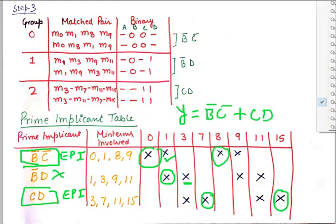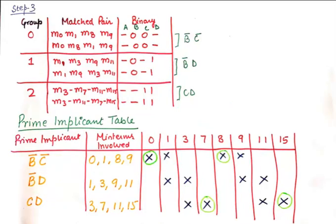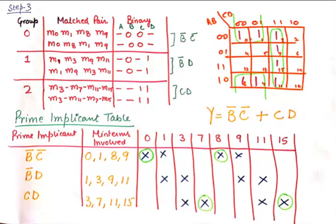To verify, draw the K-map and fill in minterms 0, 1, 3, 7, 15, 11, 9, and 8. The first grouping of four 1s gives CD, and the next grouping of four 1s gives B̄C̄. This confirms the result using both methods. So this is what the tabular method, or the Quine-McCluskey method, is. You can extend this method to five- and six-variable problems as well. I hope you liked the video — if you did, give it a thumbs up and consider subscribing. Take care, bye bye.